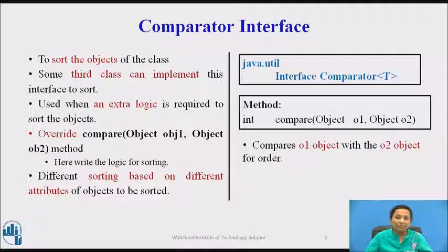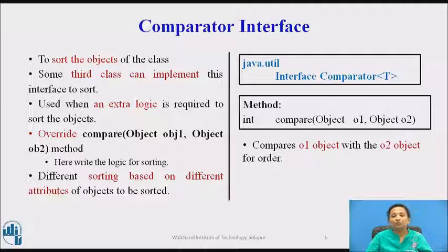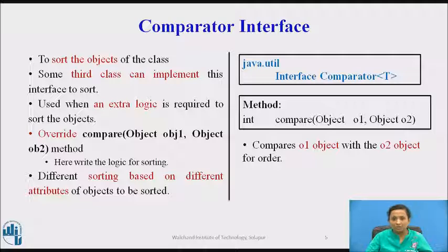To enable total ordering on objects, we need to create a class which implements the Comparator interface and then override its compare method. The compare method takes two parameters: object1 and object2. The Comparator interface is used when extra logic is required to sort the objects. In the compare method, the logic of sorting will be written. We can implement different sorting based on different attributes of the objects to be sorted. This interface is present in the java.util package, and the class which implements this interface needs to override the compare method.